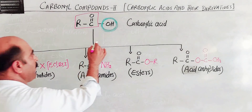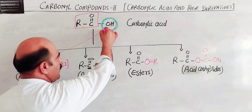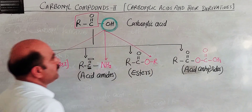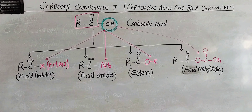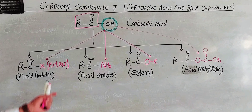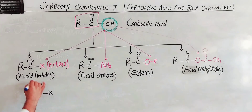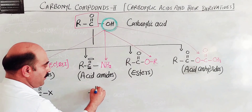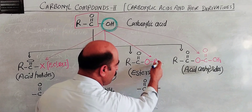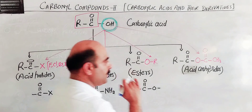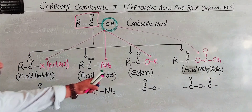To summarize the derivatives: when the O-H group of carboxylic acid is replaced by a halogen (X), the compound is an acid halide — functional group C=O and X. When replaced by NH2, the compound is an acid amide — functional group C=O and NH2. When replaced by an alkyl group OR, the compound is an ester — functional group C=O and O-R. These are the main derivatives of carboxylic acids.